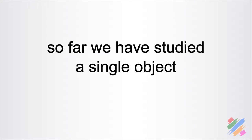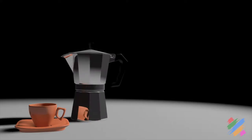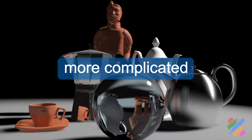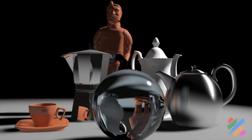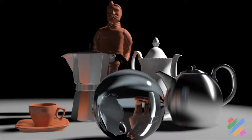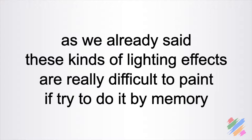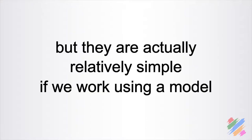So far we have studied a single object. Now we are going to see quickly what happens when we have a scene composed of different items with different levels of reflectivity and transparency. Things get more complicated because, according to the shape of the material and the external surface, in both the reflected and refracted image of every object, we see appearing the other items of our scene. For example, if we watch this coffee maker, we can see the reflected part of this cup, while if we change its surface, we can see its color. These kinds of lighting effects are really difficult to paint by memory, but they are actually relatively simple if we work using a model.